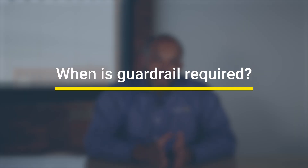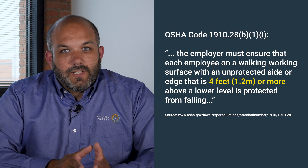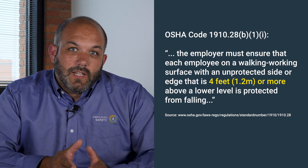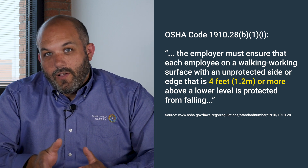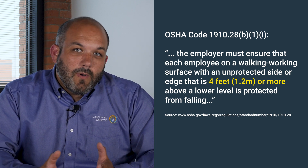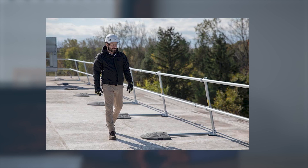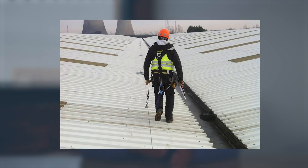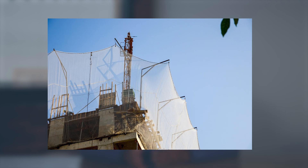The first thing we're going to go over is when guardrail is actually required. In general industry, OSHA says that if you're working on a level that is four feet or more above another level, then you're at risk of a fall injury and you need some form of fall protection. That fall protection can be a guardrail, a personal fall protection system, or a safety netting system. In this video we're just going to focus on guardrail requirements. If you want more information about fall protection height requirements, we have another video that goes into more detail.